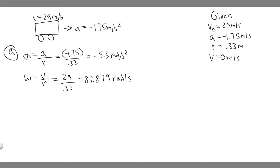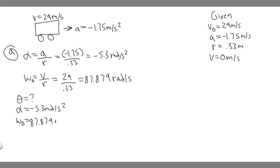Now let's solve for how many revolutions the tire makes before it comes to a stop — we need to solve for theta. Alpha is minus 5.3 radians per second squared. Omega initial is 87.879 radians per second, based on the initial velocity. And the final omega is just 0 radians per second.